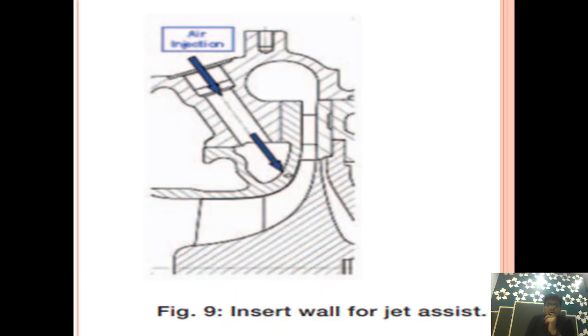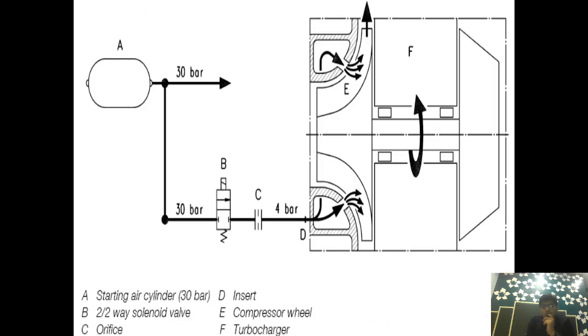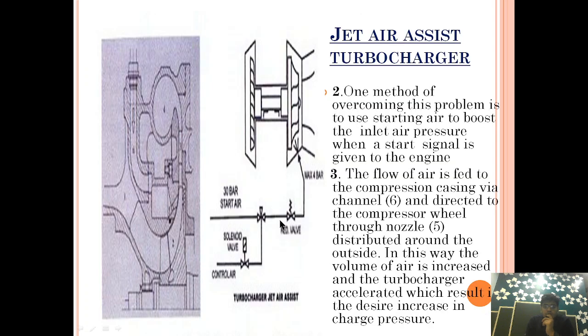How is air entering? A 2-way valve is provided, controlled by a solenoid, which only supplies 4 bar air for a momentary period when the auxiliary engine is starting. One method of overcoming this problem—poor combustion at starting which causes black smoke.